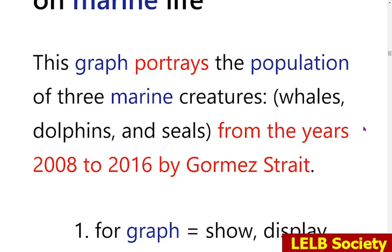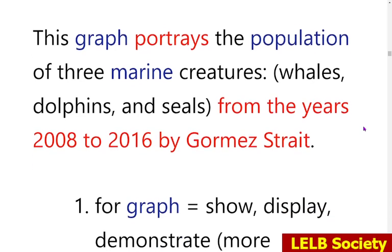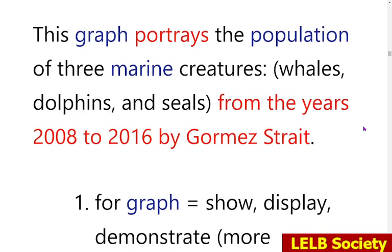The report begins: 'The graph portrays the population of three marine creatures — whales, dolphins and seals — from the years 2008 to 2016 by Gourmet Strait.' First of all, this is a misrepresentation of the visual information. The correct timeframe is from 2006 to 2018, and the correct phrasing is 'in the Gourmet Straits,' not 'by the Gourmet Straits.'